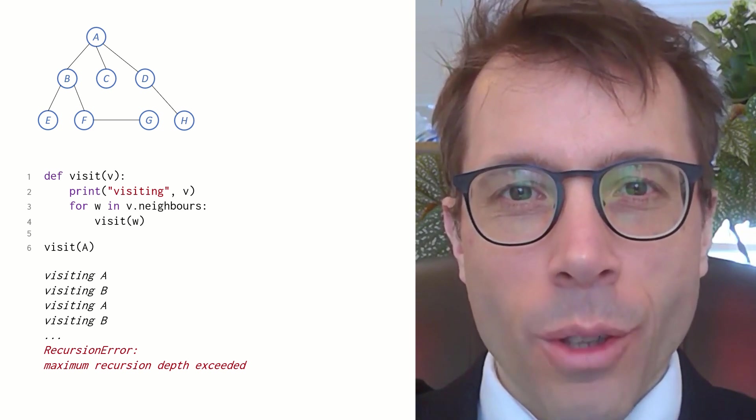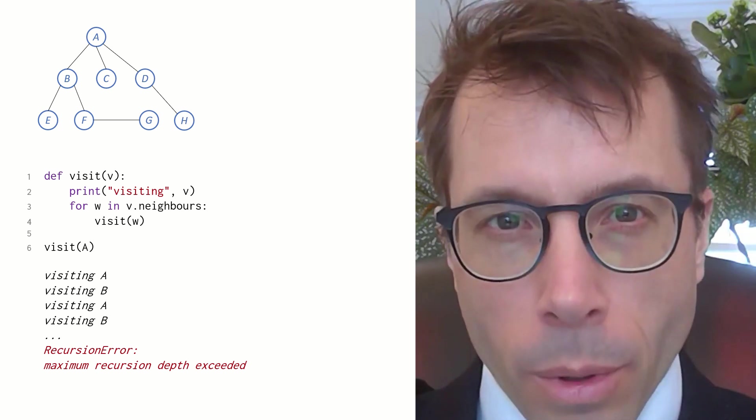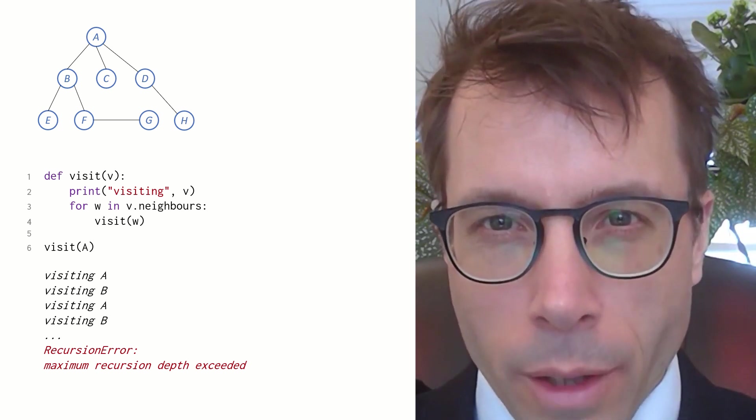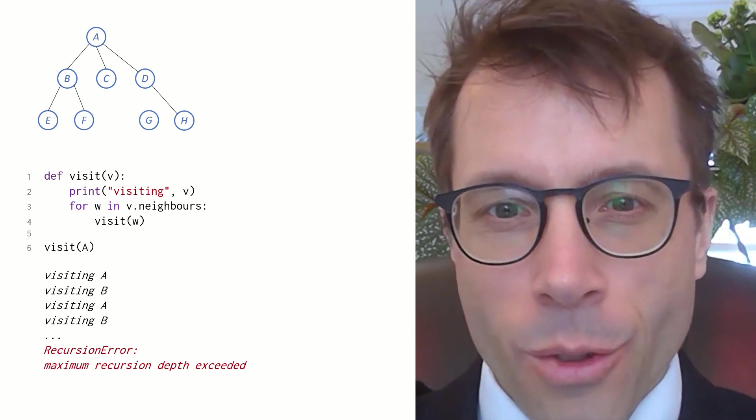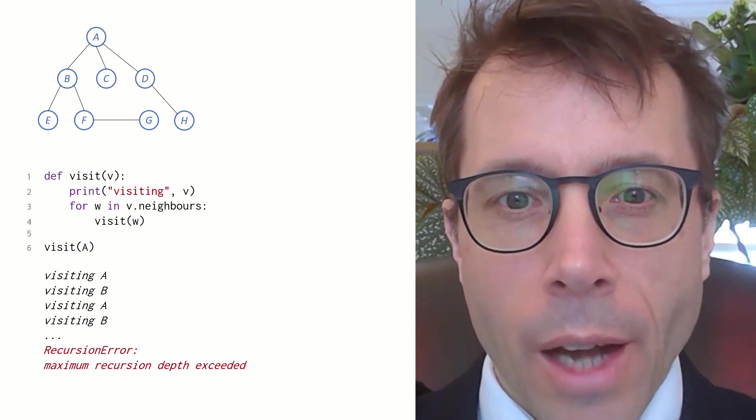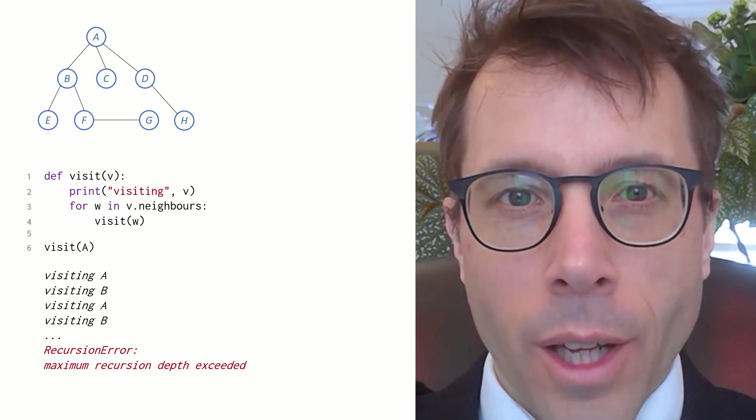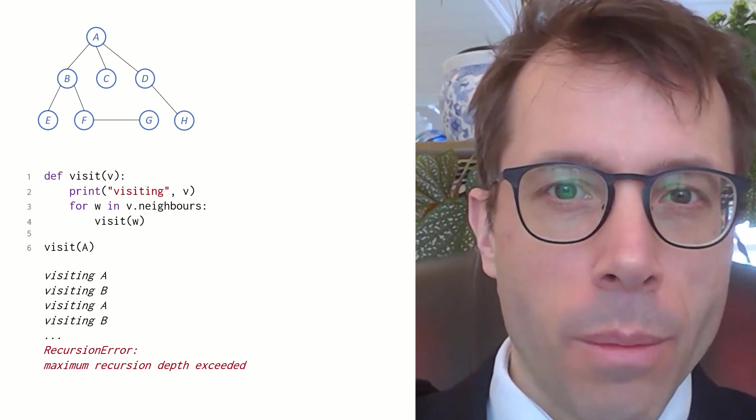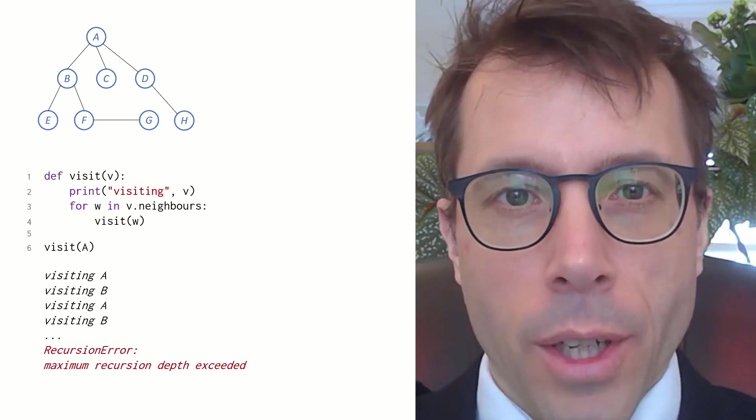This is what it does. It gets stuck in an infinite loop, and eventually the program gives up. The trouble is that we drew the graph suggestively to make it look like there's direction, that the root is at the top and the children are underneath. But there's nothing in the definition of a tree that guarantees this. A tree is an undirected graph. A has B as one of its neighbours, and B has A as one of its neighbours. So that's where the infinite loop comes in.